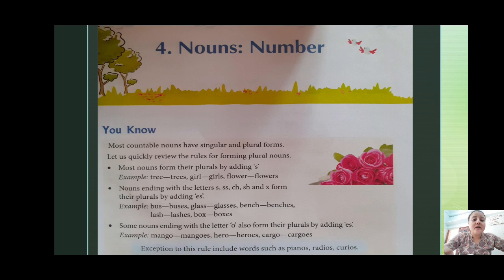تب جا کے singular کا plural form بنتا ہے۔ For example, bus → buses, glass → glasses, bench → benches, lash → lashes, box → boxes.